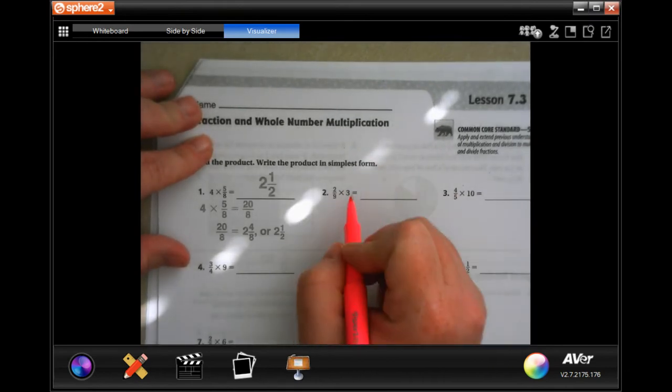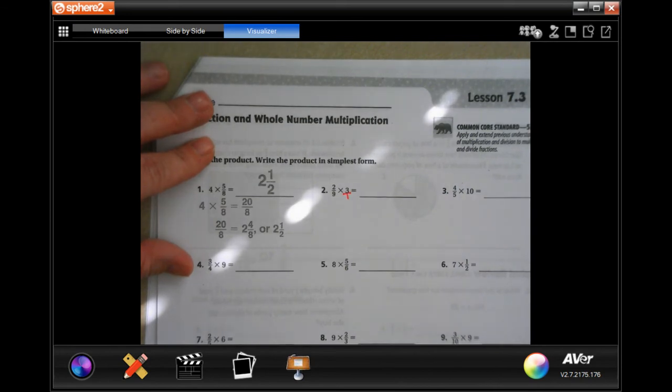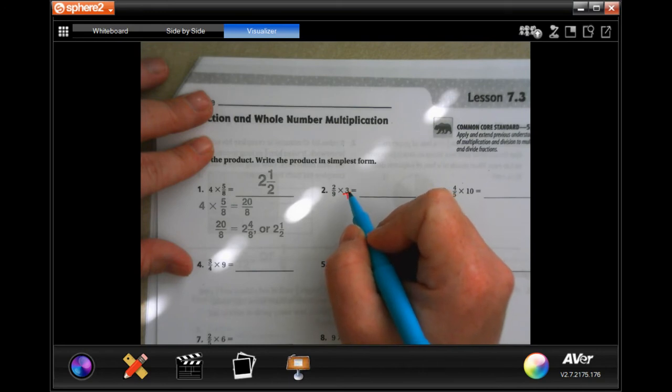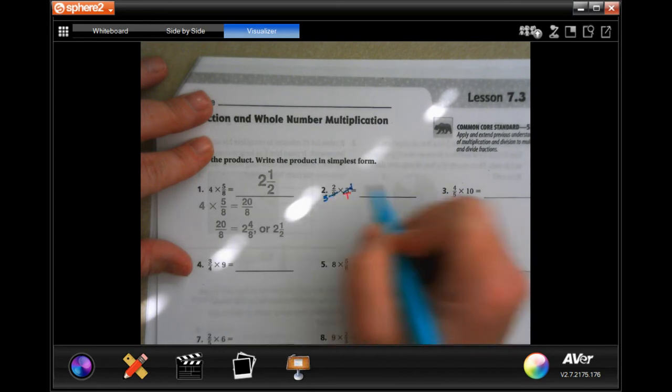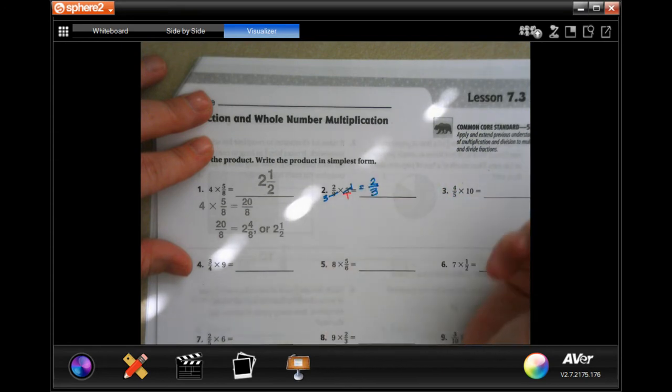So we're going to do these exactly the way that we did in 7.1, and I'm going to put that 3 over 1. We're going to go in and reduce as much as we can. It looks like I can't reduce anything by 2, but 3 and 9. So 3 goes into 3 once, and 3 goes into 9 three times. So now, 2 times 1 is 2, and 3 times 1 is 3, 2 thirds, done.